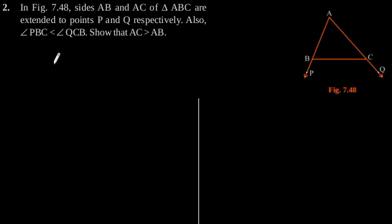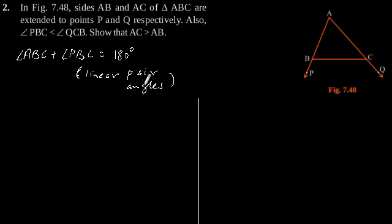Considering this figure, we can say that angle ABC plus angle PBC equals 180 degrees, since they are linear pair angles. This implies angle ABC equals 180 degrees minus angle PBC. Let's call this equation 1.